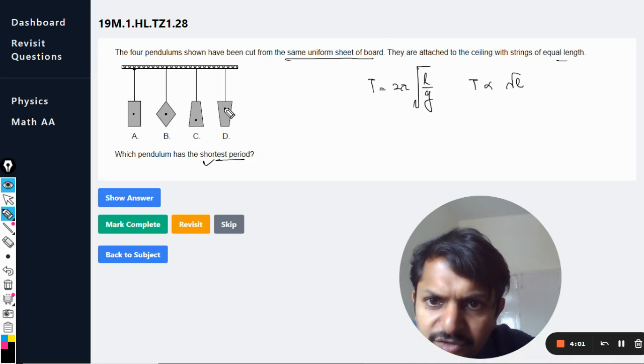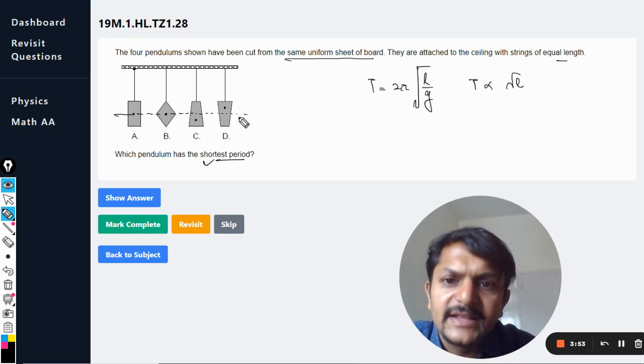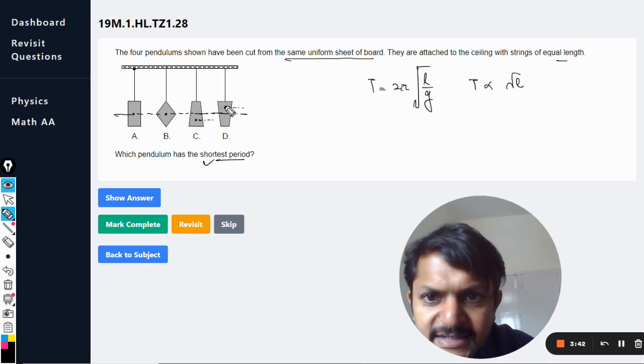In the case of D, it is a bit higher like this. So you can clearly see that the center of mass is a bit higher. Compared to the lower positions in other cases, this length is lesser.